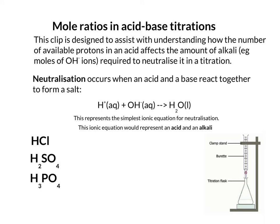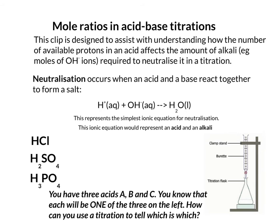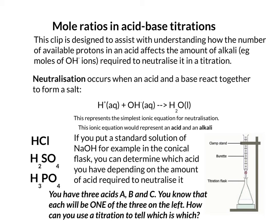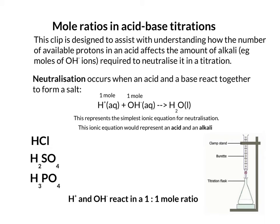If we take three acids A, B, and C, and titrate them in three separate titrations, the goal is to identify which acid is which. You know that each will be one of the three acid types discussed. What you do is use a standard solution of sodium hydroxide in your conical flask and determine which acid you have depending on the amount of acid required to neutralise it. The key principle is that H⁺ and OH⁻ react in a one-to-one mole ratio in a neutralisation.